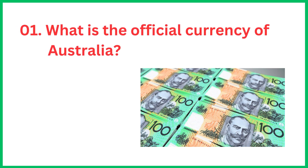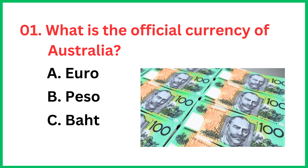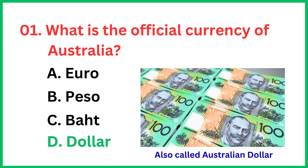What is the official currency of Australia? The correct answer is option D, dollar.